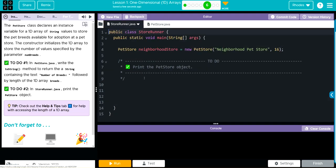Let's go back to store runner. We need to print off our object: System.out.println, and we're going to print neighborhoodStore. Make sure it's spelled right. There we go, we got it spelled right now.